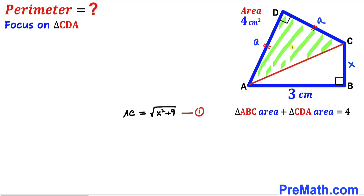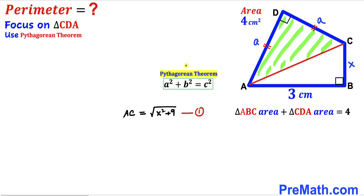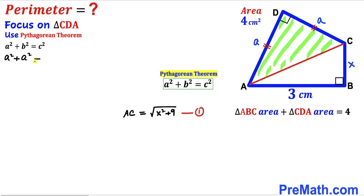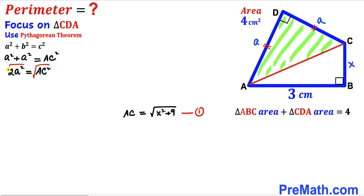Now we focus on right triangle CDA and apply the Pythagorean theorem again: a² + b² = c². Here the two legs are both lowercase 'a', and AC is the hypotenuse. Filling in, a² + a² = AC², so AC = a√2. This is equation number two.